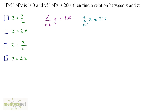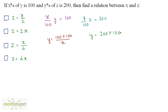We have to find a relation between X and Z. Let us solve the left equation: Y is equal to 100 times 100 divided by X. Now analyzing the right equation, we can get Y on the left hand side: Y is equal to 200 times 100 upon Z.